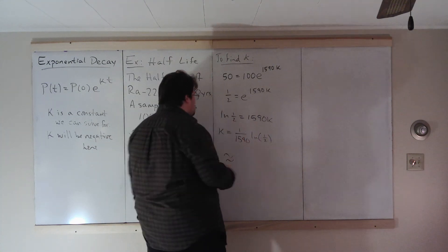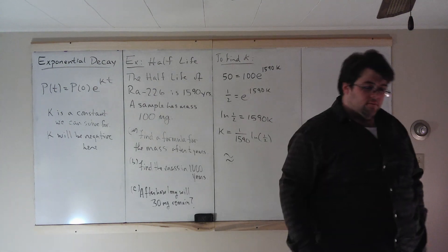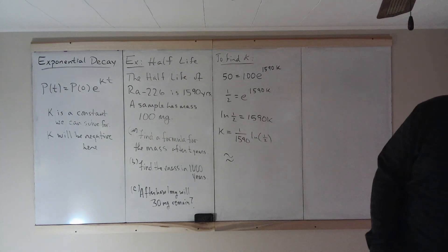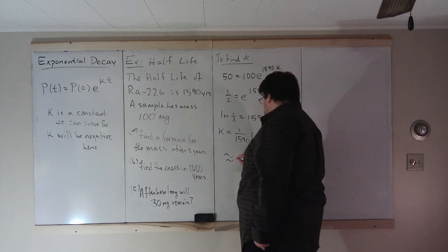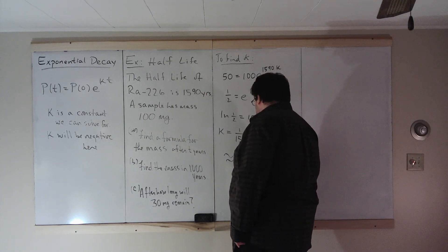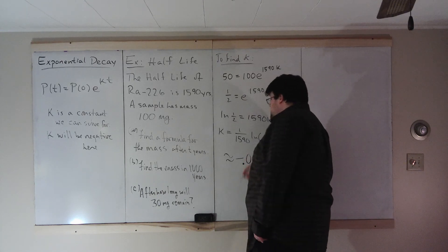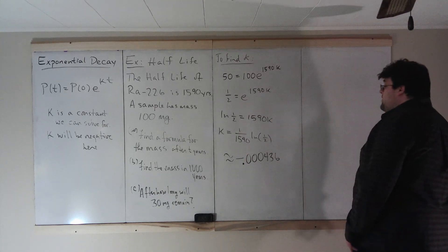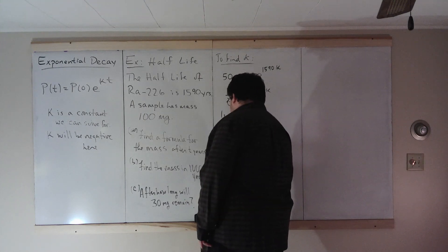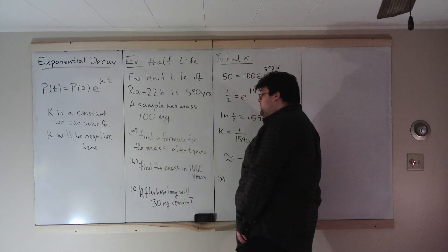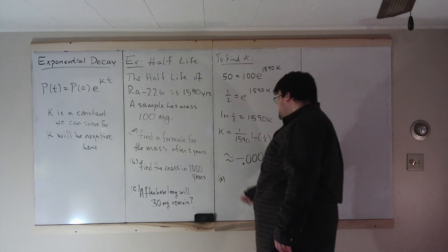As a decimal, and natural log of 1 half, this is also the negative log too. As a decimal, we have negative 0.000436. So we have our constant k and we can use this to find, for part a, a formula for the mass after t here.